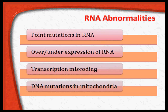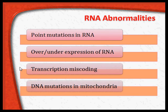Just like DNA abnormalities, there could be abnormalities in the RNA too. There could be point mutations in the ribonucleic acid, over- or under-expression of RNA, or miscodings in the transcription from DNA to RNA. These miscodings result in new or abnormal proteins, and that results in tumor formation.